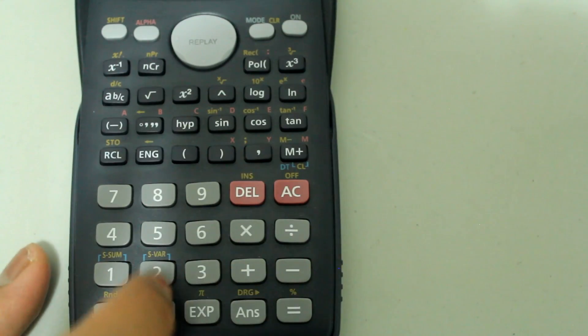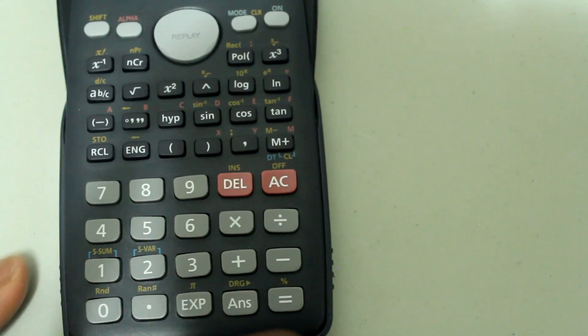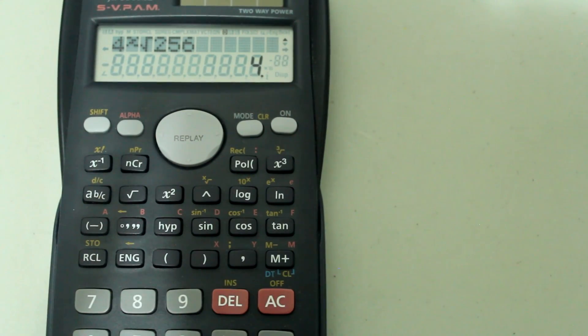Type in 256 on your keyboard and hit equals, and you get 4 as the answer. We know that the 4th root of 256 is 4.